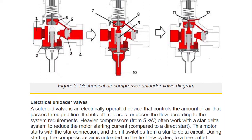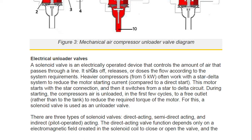The electrical unloader valve uses a solenoid valve — an electrically operated device that controls the amount of air passing through a line, shutting off or releasing flow according to system requirements. Heavier compressors from 5 kW often work with a star-delta system to reduce motor starting current. During starting, the compressor air is unloaded in the first few cycles to a free outlet rather than to the tank to reduce the required motor torque, using a solenoid valve as the unloader valve.